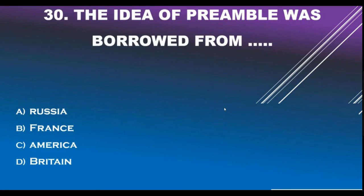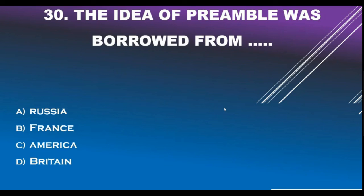Question number 30. The idea of the Preamble was borrowed from: Option A - Russia. Option B - France. Option C - America. Option D - Britain. Correct answer is Option C: America.